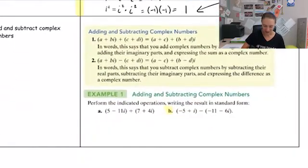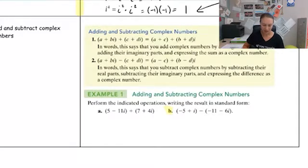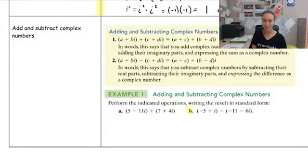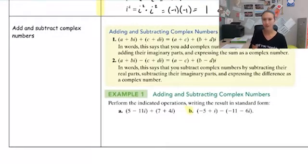Going down here, we're going to start by looking at adding and subtracting complex numbers. These are going to work very similarly to how we add and subtract anything with variables, even though i technically is not a variable. A lot of rules in math tend to work the same way for lots of things. A variable is just in place of any number, so in this case we're going to be looking at imaginary numbers.